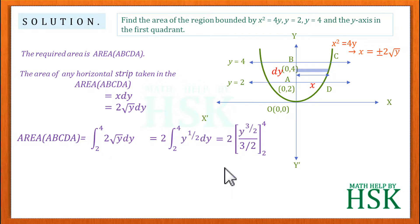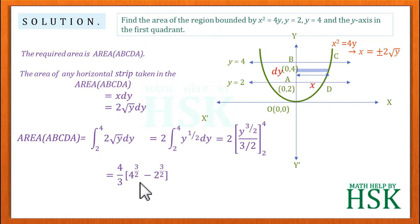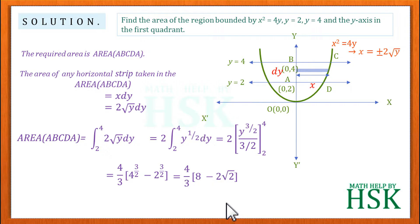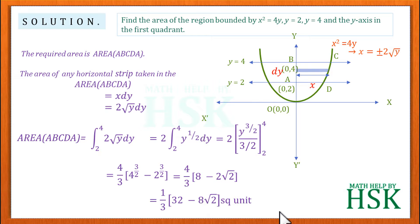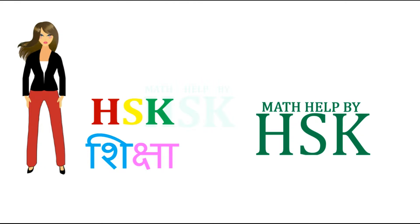Applying the limits, we get (4/3) times [4^(3/2) − 2^(3/2)], which gives (4/3)(8 − 2√2). This can be written as (1/3)(32 − 8√2) square units, which is the required answer.